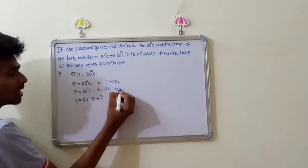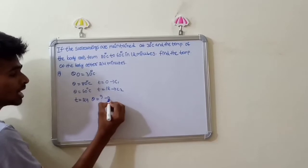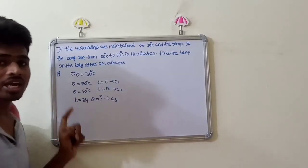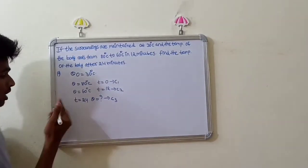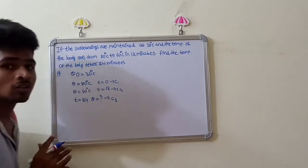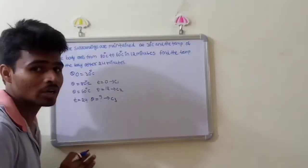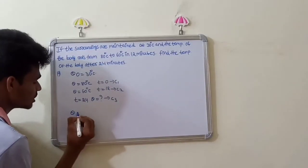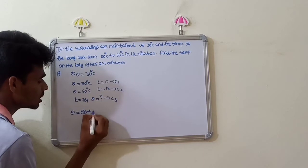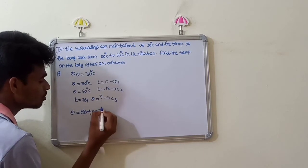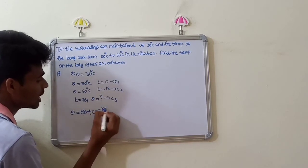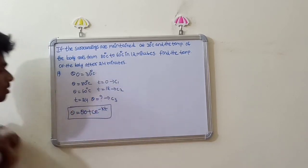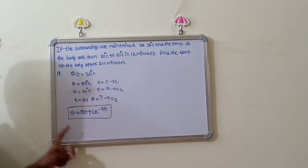We have Case 1, Case 2, and Case 3. Using Newton's Law of Cooling, the formula is: theta is equal to theta_s plus C into e power minus kt.